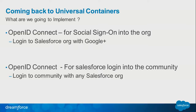Now that we understand OpenID Connect, let's come back to Universal Containers' problem. We'll use OpenID Connect for social sign-on into Salesforce with Google — Salesforce as the relying party and Google as the IdP. We'll also look at the reverse: Salesforce as an OpenID Connect provider, using Salesforce credentials to log into a product community.